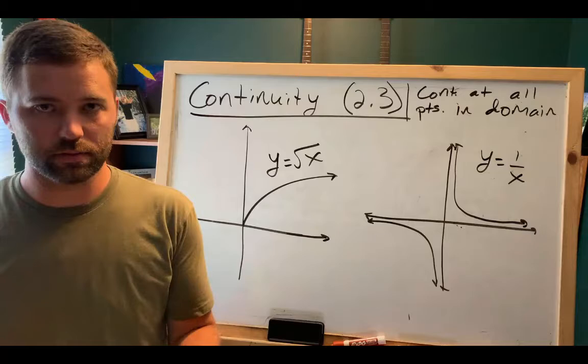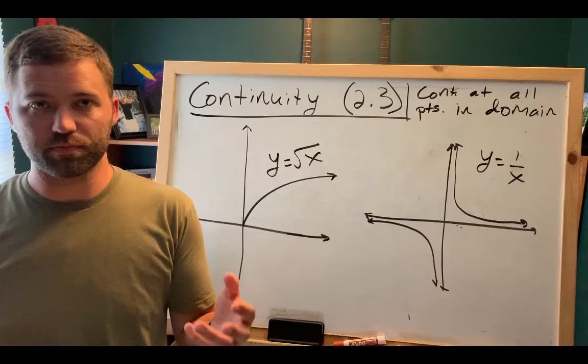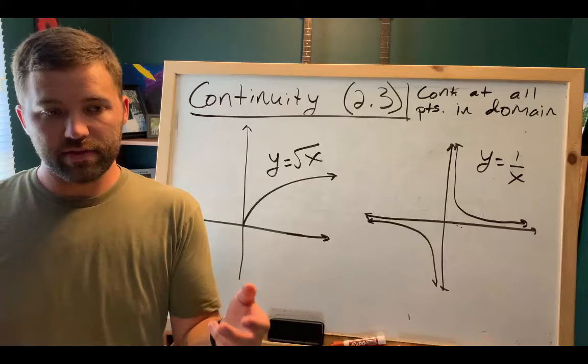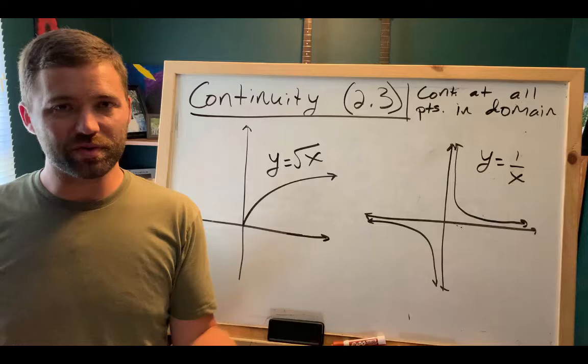Continuous on an interval is probably what you think of when you think of discontinuities in general. Hopefully you watched the video before this, which talks about the three-prong test for continuity. In the graph I showed in that video, we would say that that function is discontinuous on the interval from 0 to 4 — it's discontinuous on that interval because there are discontinuities on the interval.